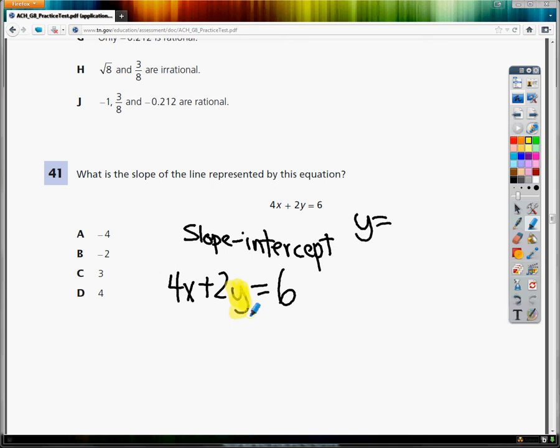Anything that's not this, I need to move over to the other side of the equation. So the first thing I'm going to do is move the thing furthest away from that y, which is the 4x. So in order to get rid of plus 4x, I need to subtract 4x.